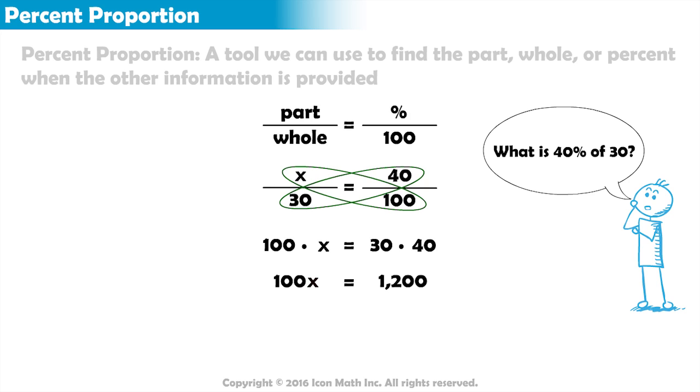Next, we solve for x by dividing both sides of the equation by 100. 100 cancels out with 100, leaving x isolated on the left side of the equation.